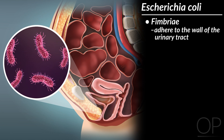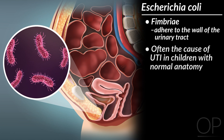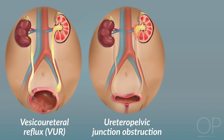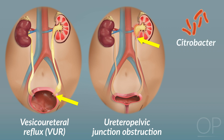Because E. coli has very effective mechanisms to cause infection in the urinary tract, it is often the cause of UTI in children with normal anatomy. Children with abnormal urinary tract anatomy, such as VUR or ureteropelvic junction obstruction, are much more likely to have UTIs caused by less virulent uropathogens, like Citrobacter or Enterococcus species.